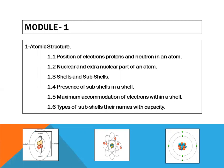Step number two, we will discuss about the nuclear and extranuclear part of an atom. In step number three, shells and subshells. Then, presence of subshells in a shell. And then, maximum accommodation of electrons within a shell. And finally, we will discuss about the types of subshells, their names with capacity.